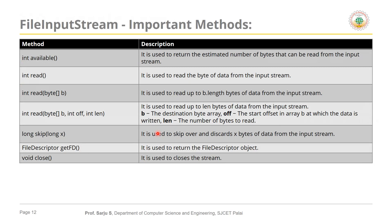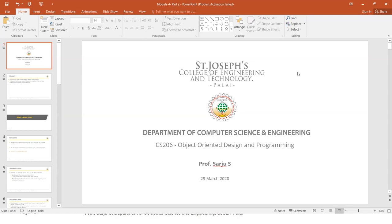The important methods available in FileInputStream include available() and read(). The available() method, which you may have already seen in the file class in the previous lecture, is used to find the size of the file in bytes — it returns the estimated number of bytes that can be read from the input stream. There are three read() methods in the FileInputStream class; let's look at the first one in Eclipse.